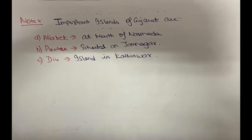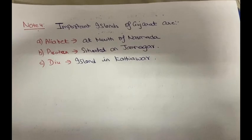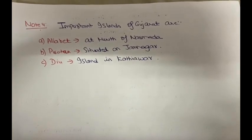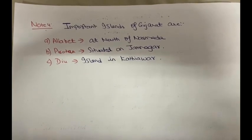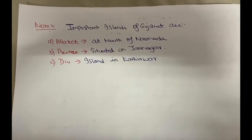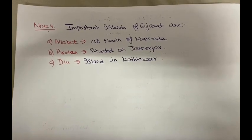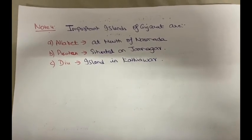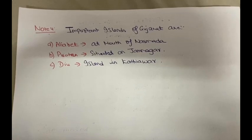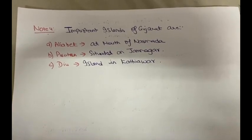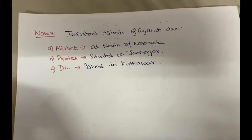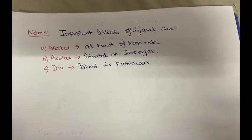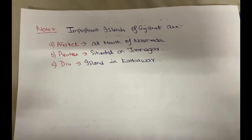I hope you are clear with this Gujarat part of the western coastal plain. Likewise, we are going to discuss the Kerala part next, and then in Part 3 we will discuss the eastern coastal plains — what happens in Odisha, Andhra Pradesh, and Tamil Nadu. You should have in mind each state's particular important names, islands, rivers, and sanctuaries. Thank you.